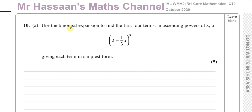It says: use the binomial expansion to find the first four terms in ascending powers of x of the bracket (2 minus a third x) all to the power of 9, giving each term in its simplest form. For binomial expansion in P2, all we need to know is the method using the NCR button and a calculator to help us find the coefficients of each term.